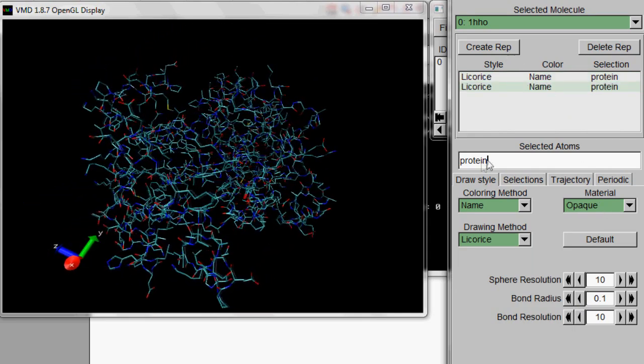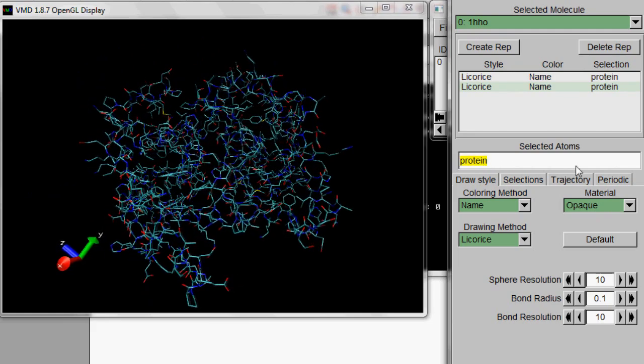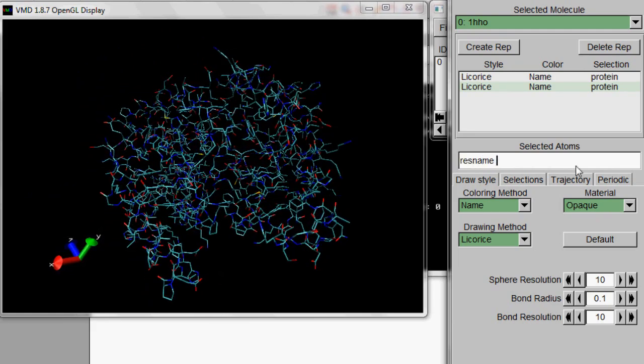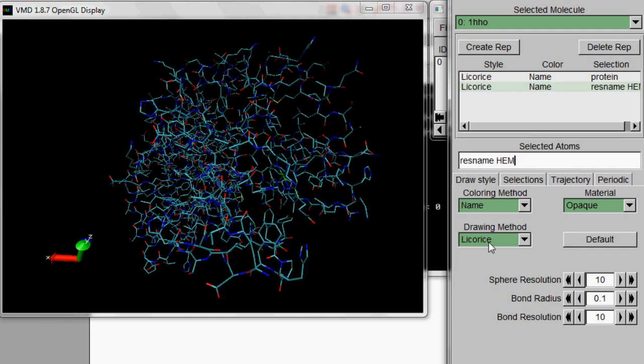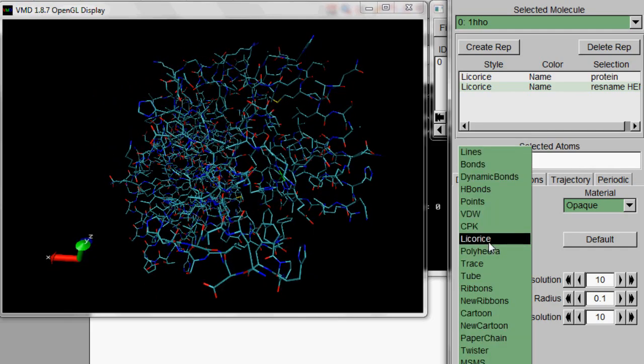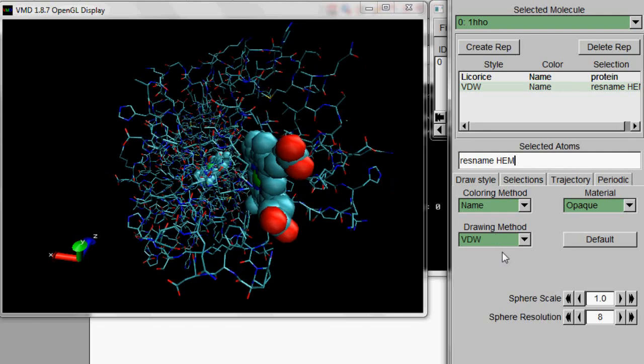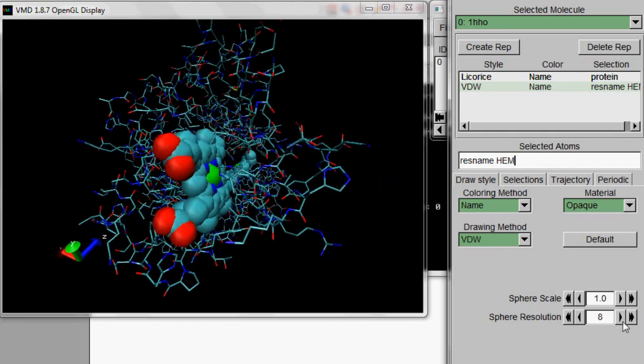So click on Create Rep. That's Create Representation. Now type in ResName Hem. And yeah, that's case sensitive. And change the draw method to VDW. That's Van der Waals. There you go. That's your heme.